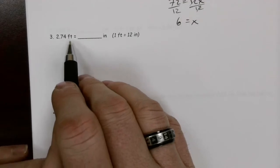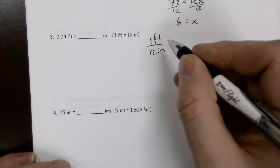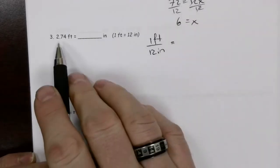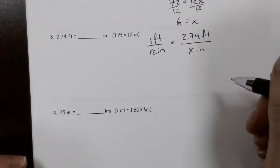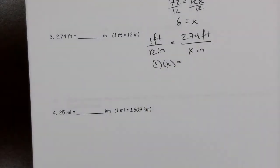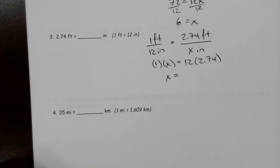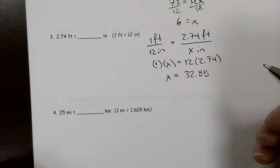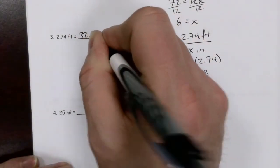Let's try another one. We want to convert 2.74 feet into inches. We know that 1 foot is equivalent to 12 inches. We've got 2.74 feet, and we don't know how many inches. Cross-multiplying gives 1 times x — and I like that, because multiplying the variable by 1 doesn't change anything, so I don't need to do the division. Then this will be 12 multiplied by 2.74, which gives us 32.88. So 2.74 feet equals 32.88 inches.